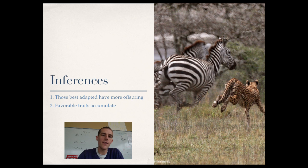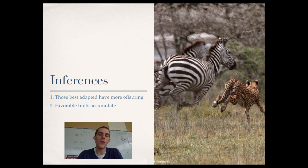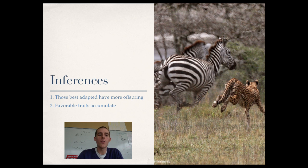His first observation was that all individuals have variation — there are differences between them. His inference from that was that those best adapted have more offspring, meaning the best-adapted animals are most likely to reproduce in a given environment. He also inferred that favorable traits accumulate over time. If the most well-adapted animals are reproducing, over time those favorable traits will accumulate and make animals extremely different from one another.